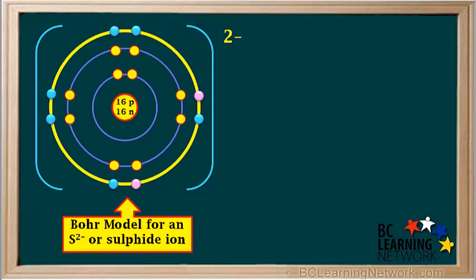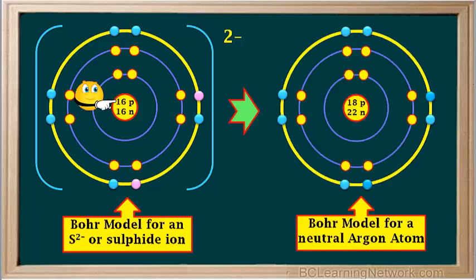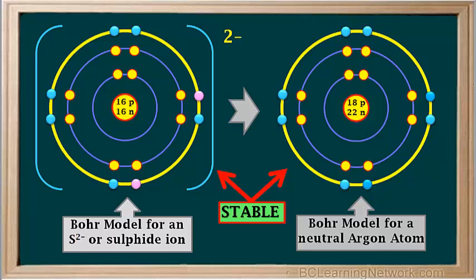When non-metal atoms form negative ions, or anions, their name changes so that it ends in the letters -ide. So a sulfur atom becomes a sulfide ion. Notice that a sulfide ion, or sulfide anion, has the same electron arrangement as a neutral atom of the noble gas argon. But you can easily tell the difference because the sulfide ion has sixteen protons and eighteen electrons, whereas a neutral argon atom has eighteen protons and eighteen electrons. A sulfur atom readily gains two electrons to form a sulfide ion because the sulfide ion has the same stable electron arrangement as an atom of the noble gas argon. Atoms tend to form ions in order to achieve noble gas stability.